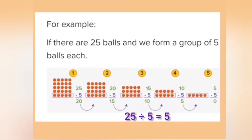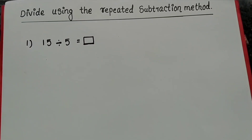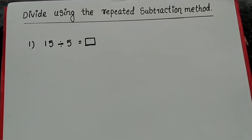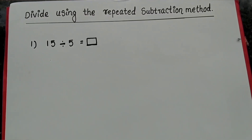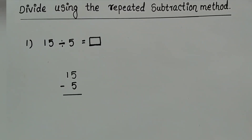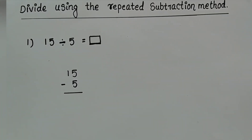So we can write this subtraction as 25 divided by 5 is equal to 5. Now let us do some examples. First example: 15 divided by 5 using the repeated subtraction method. Here we are going to subtract 5 from 15 until we get 0. So it is 15 minus 5.